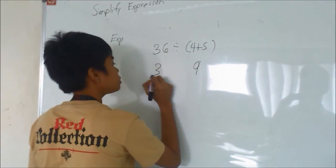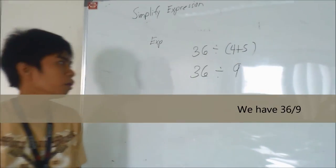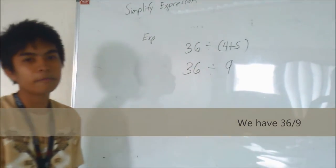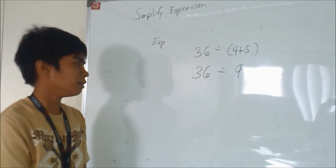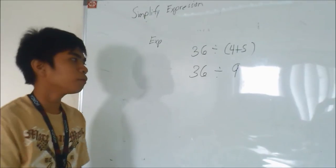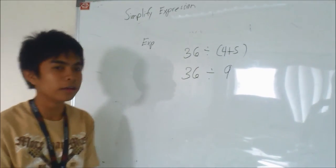Bring down 36 divided by 9. Now we have 36 divided by 9, which equals 4.